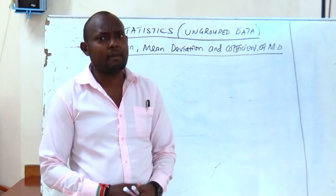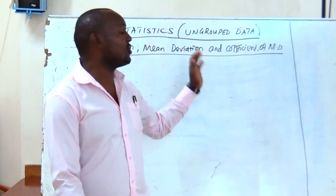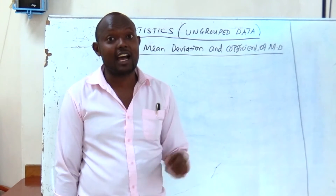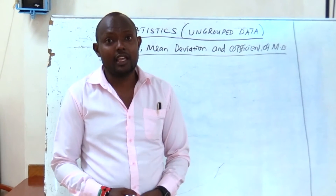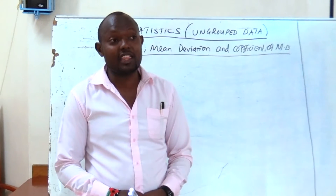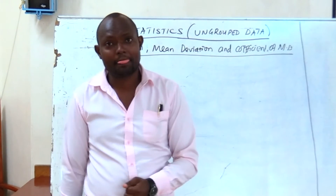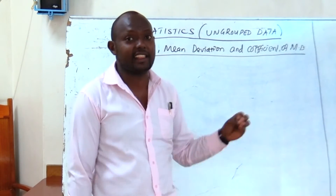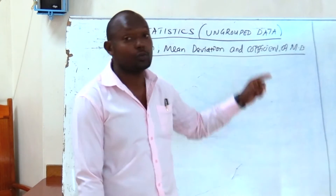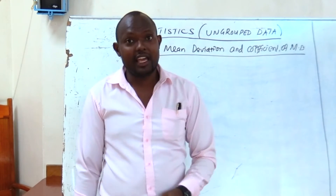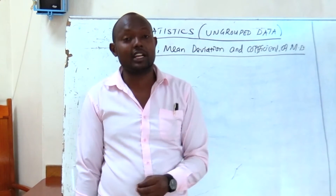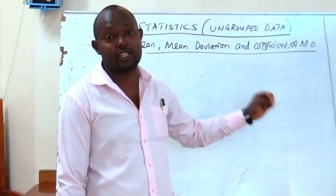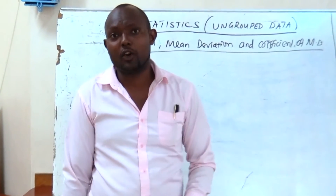Due to public demand, the majority of students have been asking about statistics, and today we are going to look at how we calculate those statistics. We shall start with the measure of central tendency. Before that, we can group data into ungrouped or grouped data. Under ungrouped data, you will be given raw data where you have to calculate measure of central tendency or dispersion.